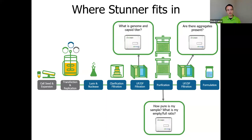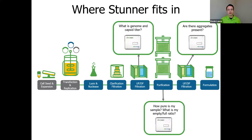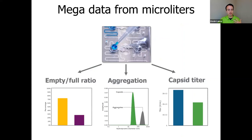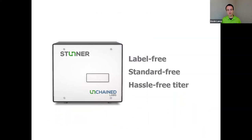This is where Stunner fits into your workflow. Stunner is perfect for very clean samples and can help answer questions on genome and capsid titer as early as ultrafiltration or affinity chromatography, giving you good answers on how well your purification setup is eliminating empty capsids and preserving capsid integrity to avoid aggregation. All of that information is available from only microliter-scale sample volumes, delivering empty-full ratio, aggregation, and capsid titer in a very fast, easy, and flexible platform assay. That's why we like to say Stunner is a label-free, standard-free, hassle-free titer machine.